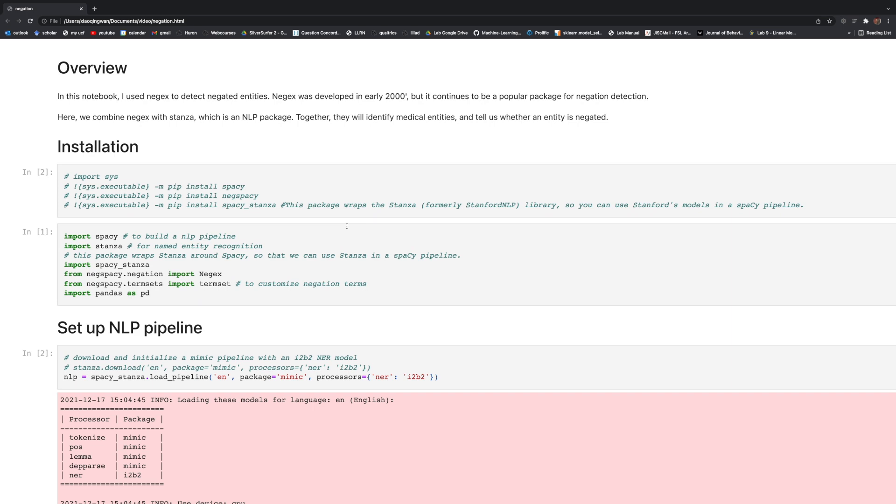Now let's take a look at the Python tutorial. To use this notebook, we need to install several packages. We need spaCy to build NLP pipeline. And we need Stanza for named entity recognition. And then we use spaCy-stanza to wrap Stanza around spaCy so that we can use Stanza in a spaCy pipeline.